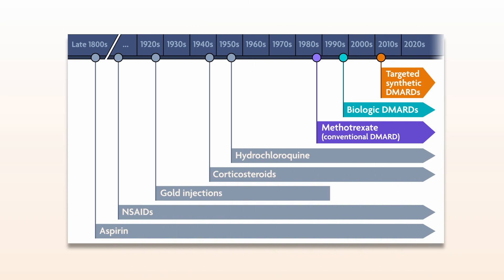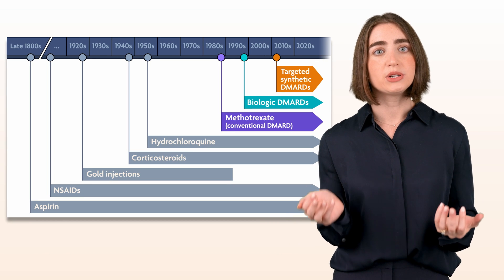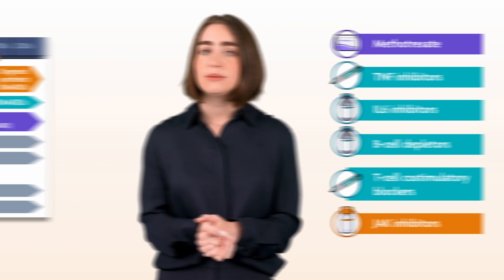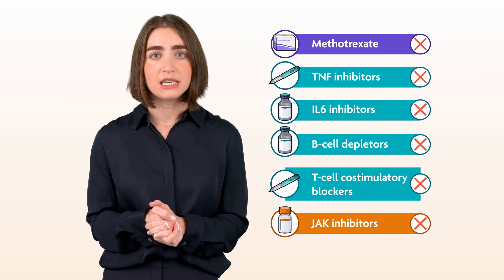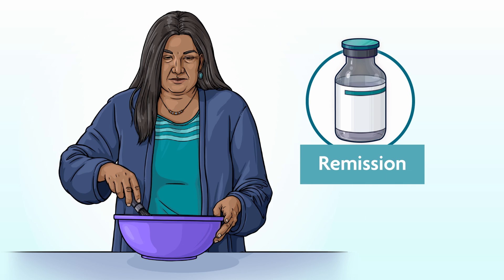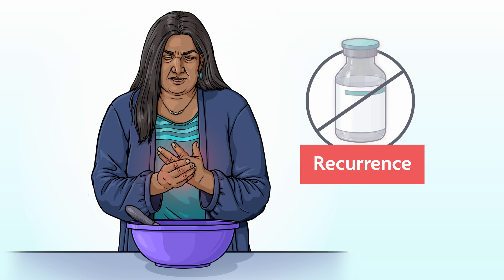Although tremendous progress has been made in the last 30 years, there are several unmet needs in the treatment of rheumatoid arthritis. There are still patients who don't respond adequately to any of the medications available. Patients may go into remission but could have a recurrence of their disease, perhaps from a discontinuation of their medications, meaning that rheumatoid arthritis requires lifelong treatment. Despite this, clinicians remain optimistic.